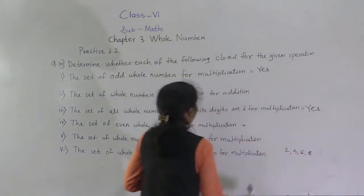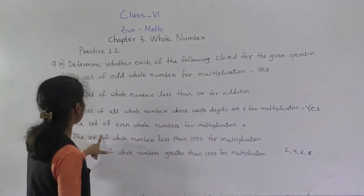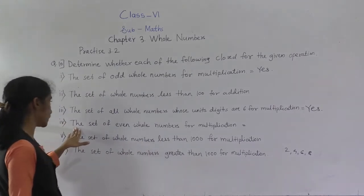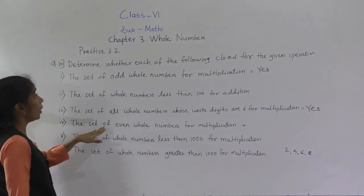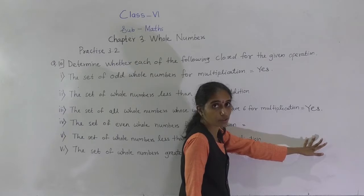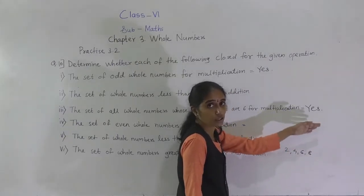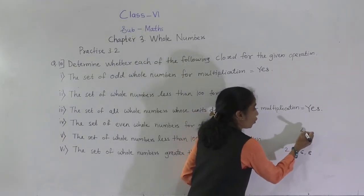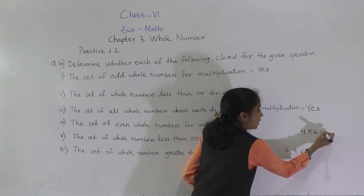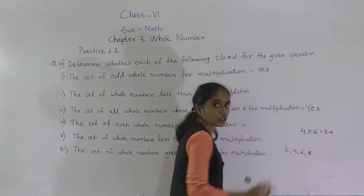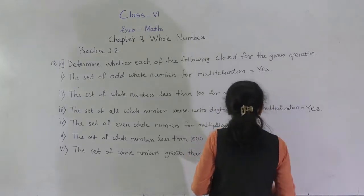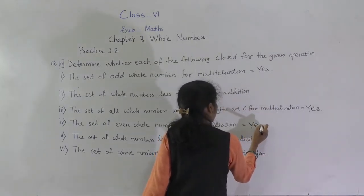Again we are getting an even whole number. If you do 4 into 6: 4 sixes are 24. Again we are getting an even whole number. Yes. So it is closed for the given operation.